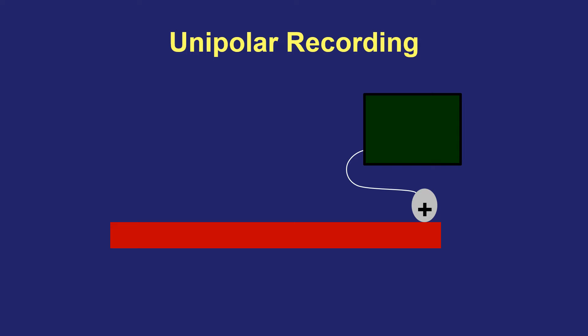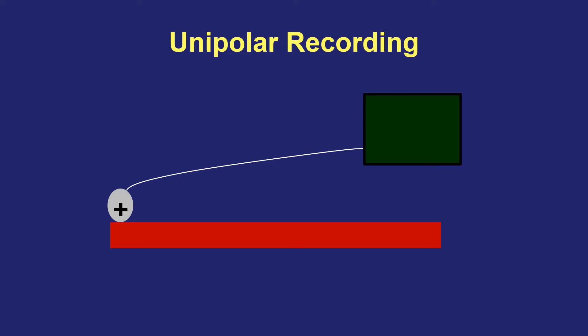If the electrode is positioned at the very dead end of the tissue, you'll have a longer period where the wavefront is out of view, then a positive deflection as the wavefront moves toward and underneath the electrode. Because the wavefront never moves away from the electrode at this position, there is no negative deflection. Conversely, if the electrode is at the very beginning of the strip, you'll see only a negative deflection as the wavefront moves away, then a flat or absent recording.